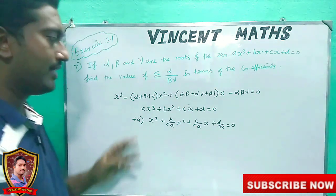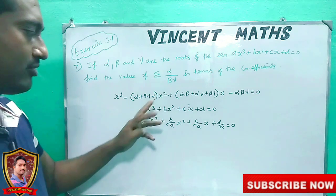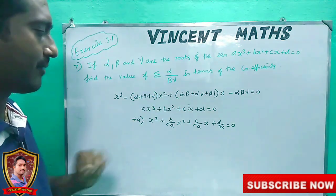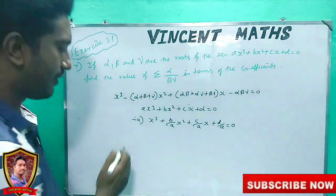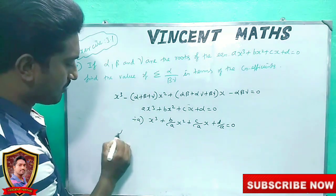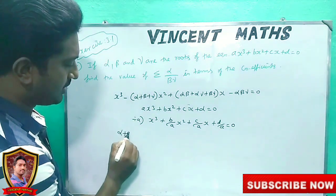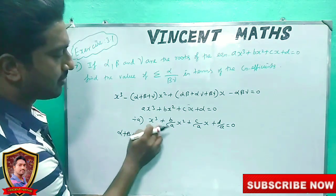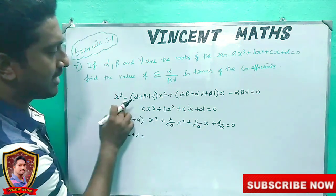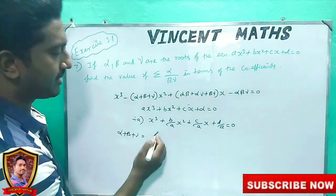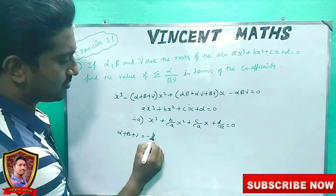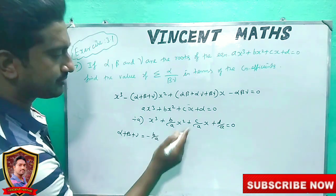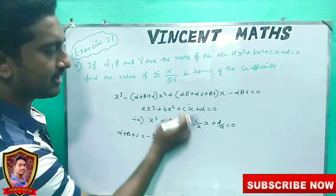Now, if you compare this common equation, one at a time: alpha plus beta plus gamma equals, with plus and minus, minus b by a.